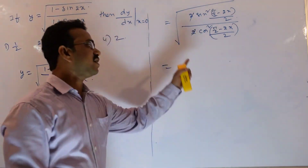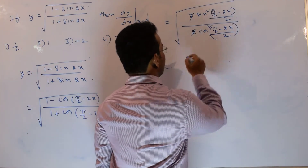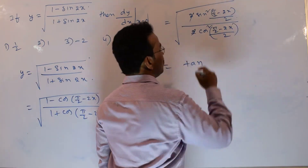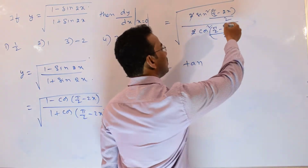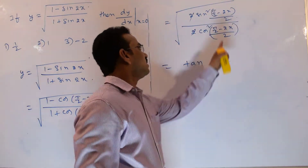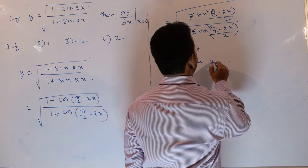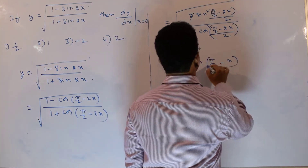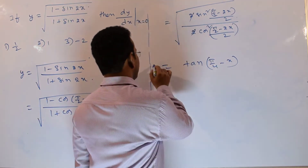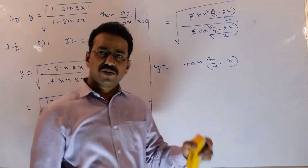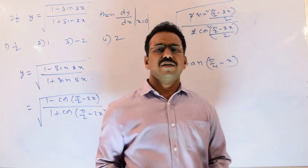The 2s cancel, and square under the root gets cancelled. We are left with sine over cos, which means tan of (π/2 minus 2x)/2. Dividing each term by 2 gives π/4 minus x. Finally, y equals tan(π/4 minus x). Now apply the concept of differentiation.